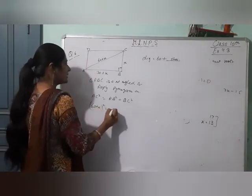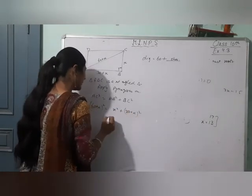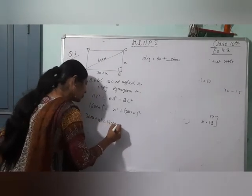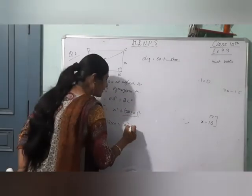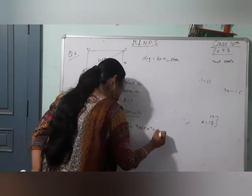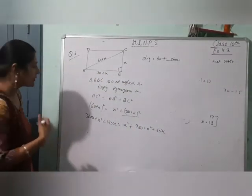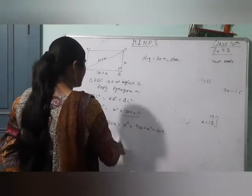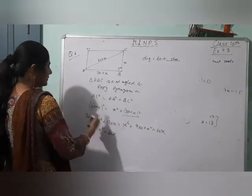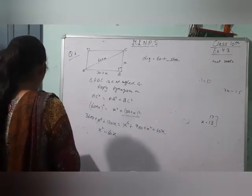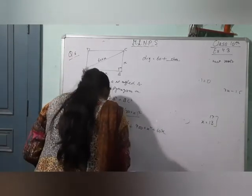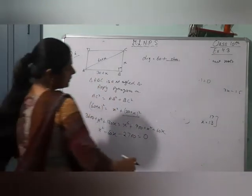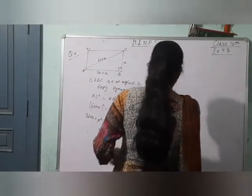Triangle ABC is a right-angled triangle, so applying Pythagoras theorem: AC square equals AB square plus BC square. So (60 plus x) square equals x square plus (30 plus x) square. Expanding (A plus B) whole square: we open both sides. Carrying all terms to one side, x square cancels. We get x square minus 120x plus 3600 minus 900 minus 2700 equals 0, giving x square minus 60x minus 2700 equals 0. Factors karna mushkil hai, so solve karenge by quadratic formula.